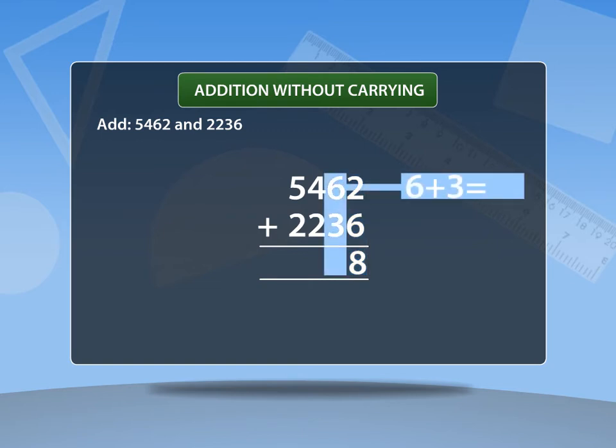Tens place, 6 plus 3 is equal to 9. Hundreds place, 4 plus 2 is equal to 6. And at last, thousands place, 5 plus 2 equals 7.